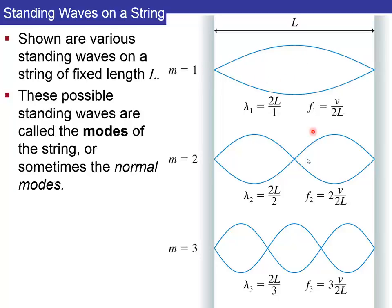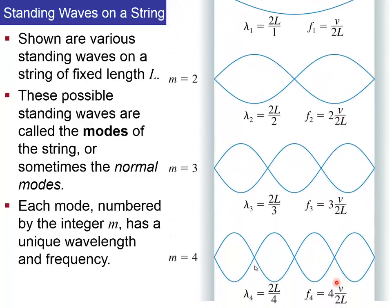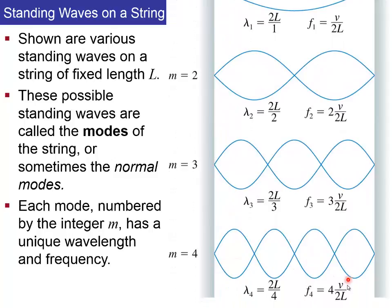So these different integers M correspond to the different modes of the string, or normal modes. And they're all numbered, M equals one, M equals two, M equals three. And they all have a unique frequency. So F1 is V over 2L, F2 is two times V over 2L, F3 is three times V over 2L. And you can go up to four antinodes. This is four times the fundamental frequency.